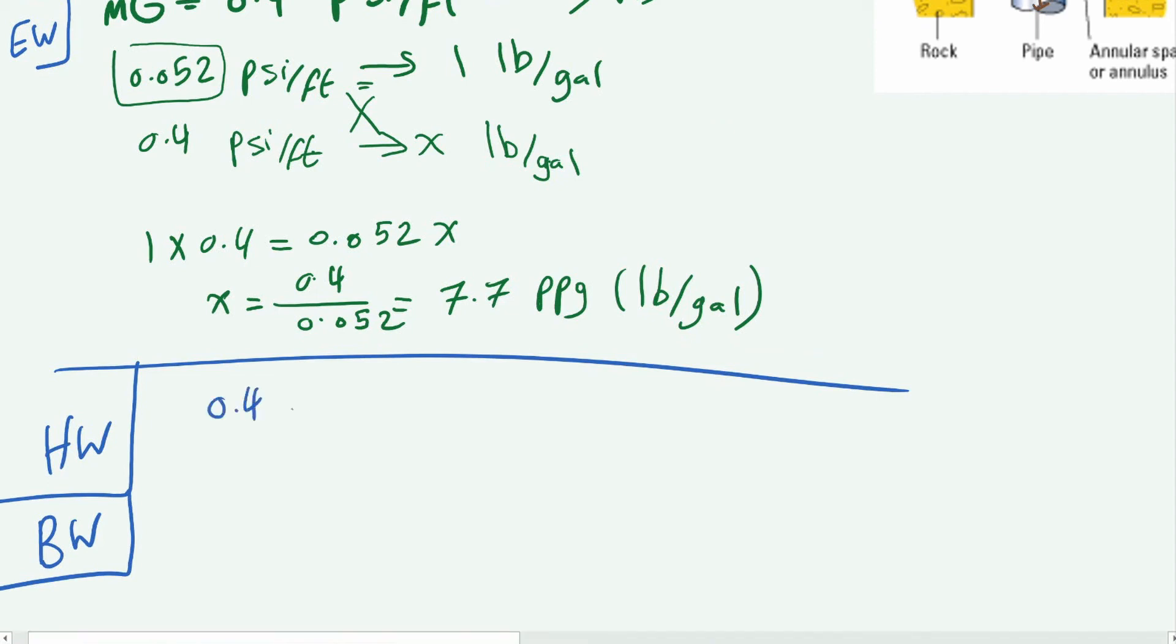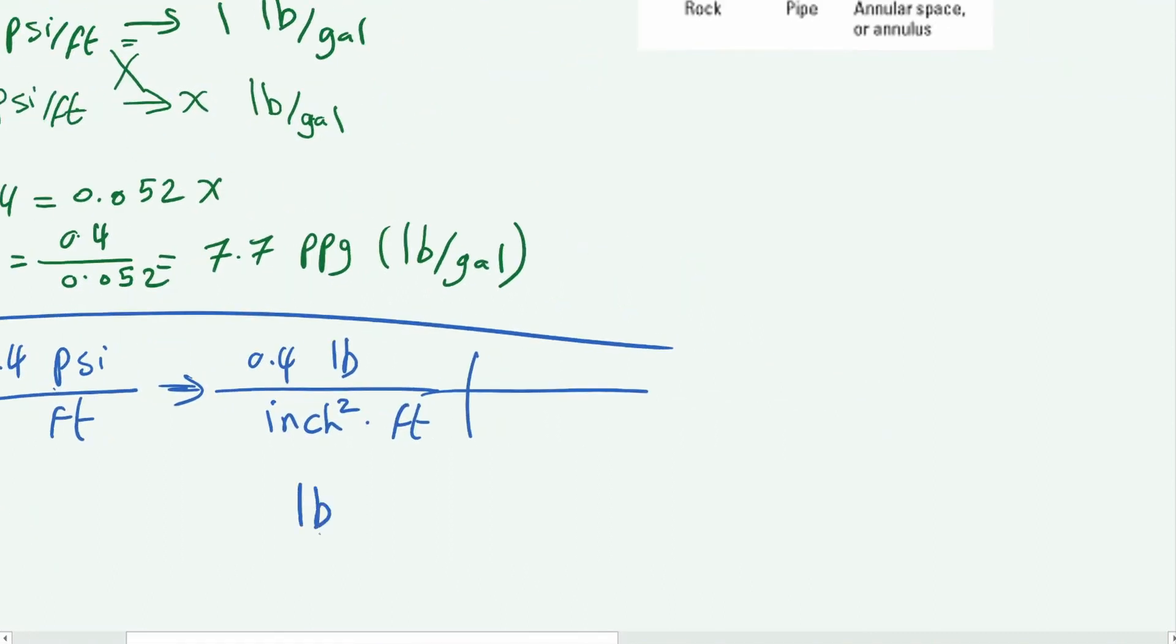We know we have 0.4 psi per foot, and 0.4 psi is pounds per inch squared. One psi is one pound per inch squared, and the feet is the same, it's downwards. You want to get it to pounds per gallon. This pound would be the same, so you wouldn't really touch it at all. We need to get inch squared feet to gallons, because this is a volumetric unit and it's squared and feet, so it can be cubed. The easier way is to transfer feet into inches. We know that one foot is equal to 12 inches. So you cancel this foot with this foot and you get yourself a beautiful inch cubed, because it's inch squared multiplied by inch, that's inch cubed.